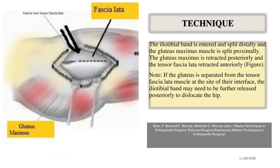The iliotibial band is entered and split distally, and the gluteus maximus muscle is split proximally. The gluteus maximus is retracted posteriorly and the tensor fasciae latae retracted anteriorly. Note: if the gluteus maximus is separated from the tensor fasciae latae muscle at the site of their interface, the iliotibial band may need to be further released posteriorly to dislocate the hip.